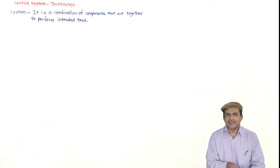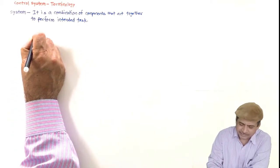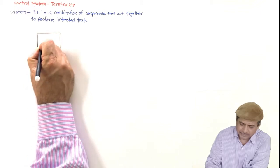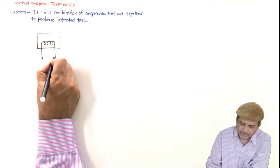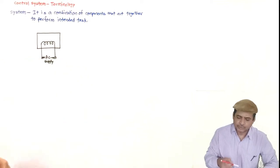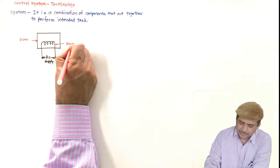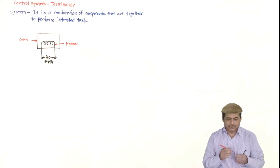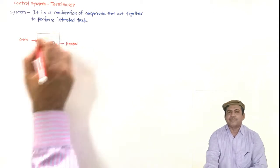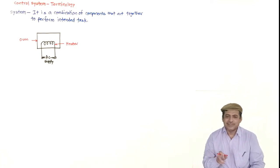It means that a certain task is assigned to that system and the system performs that task. Let us see some real-life examples of systems. Consider a heater, which is supplied with AC supply. There are two components — the coil and the heater — and they act together to provide heat to the environment inside the compartment. We can also maintain the temperature at a certain desired value, but then that becomes a control system.